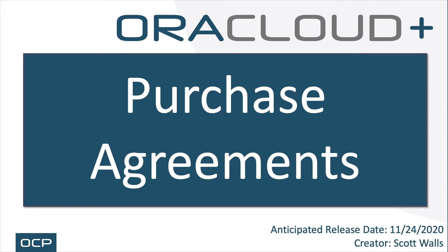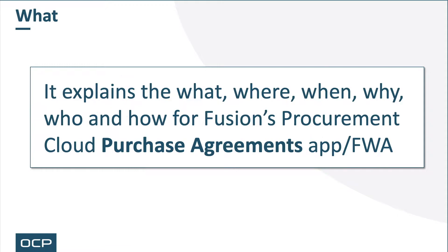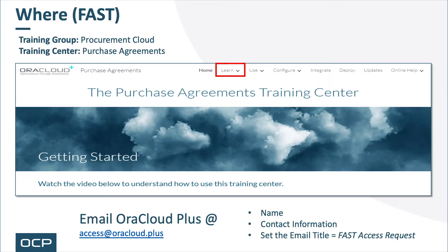Hello, and welcome to the Purchase Agreements video presentation. This video is intended for beginners looking to learn more about Fusion's Purchase Agreement capabilities. It explains the what, where, when, why, who, and how of Fusion's Procurement Cloud Purchase Agreements application, or functional work area. This video snippet, as with all Oracle Cloud Plus video snippets, can be found within FAST, our Fusion Application Support Tool, under the Procurement Cloud Training Group and the Purchase Agreements Training Center.